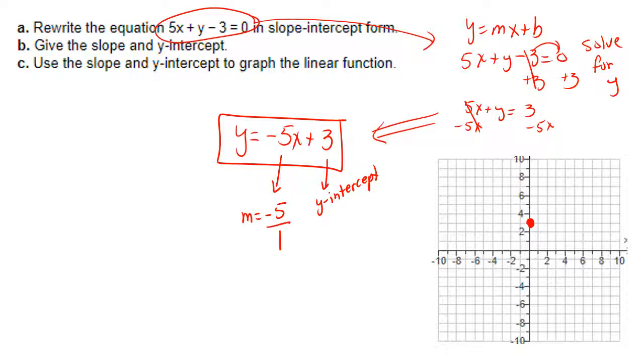Now the fact that that's negative 5 on top means I will count down 5 units. And then I will count over to the right 1 unit.